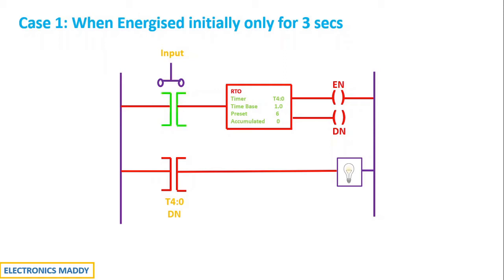Once the push button switch is pressed, the contact will get energized, the rung will get energized, the timer is energized. Once the timer is energized, it acts exactly similar to the OnDelay Timer and the Enable will go high instantly, whereas the done bit doesn't go high. It starts counting the time delay. After 3 seconds, it will stop because I will be de-energizing it now.